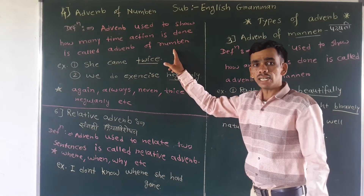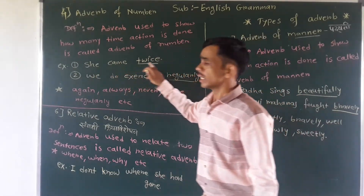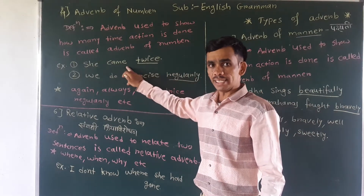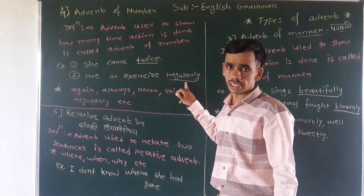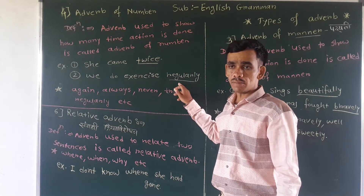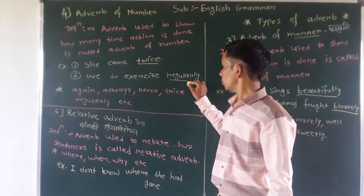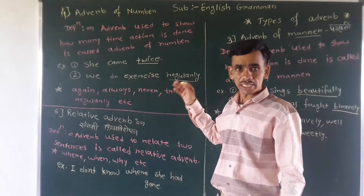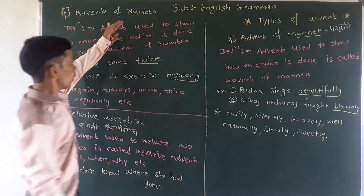Sankhya vatshya kriya vatshya. For example, she came twice — va do ba hai. Then second, who will do exercise regularly? Regularly shows how many times the action is done. That's why it is also adverb of number.